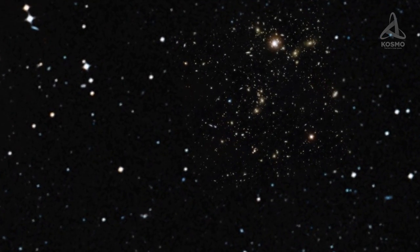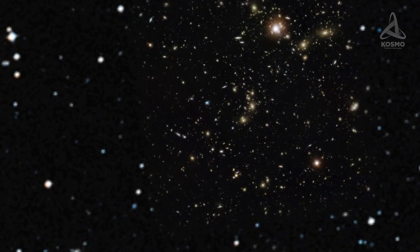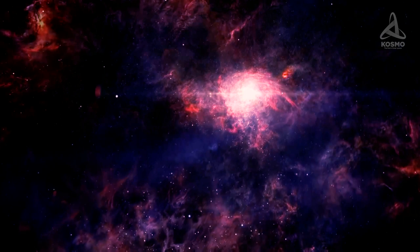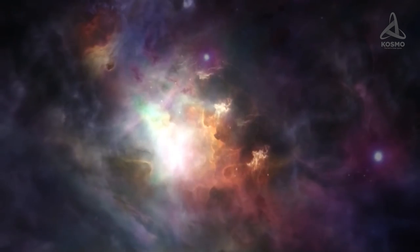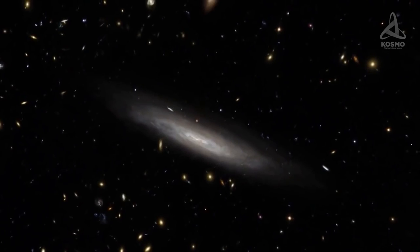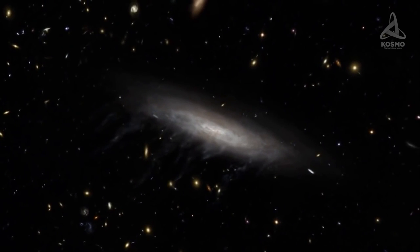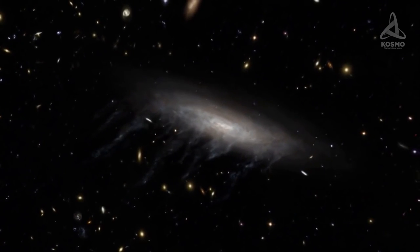ESO 137-001, in its turn, is part of Abel 3627, a large galaxy cluster. Moving to its center at an incredible speed of almost 2,000 kilometers per second, the galaxy collides with interstellar gas pressure inside the cluster. As a result, its own gas is blown out, leaving behind tails that stretch for up to 260,000 light-years.